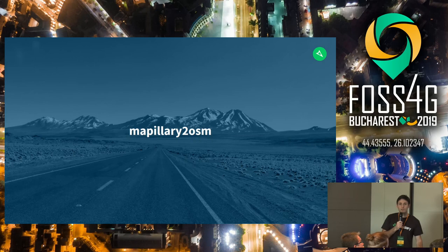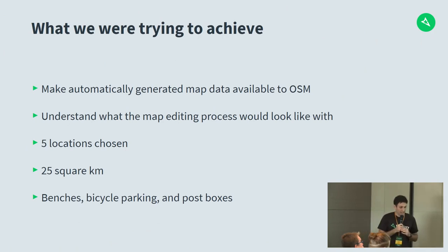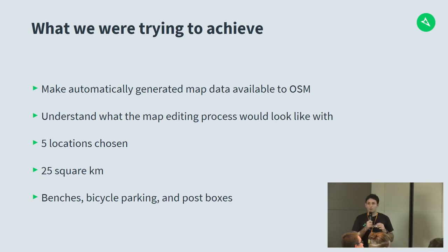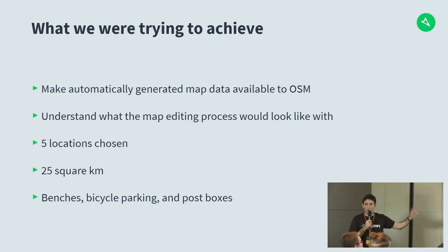The first project I want to talk about was called Mapillary to OSM. This was a general project where we were trying to make this data available for OSM and understand what the editing process would look like, without actually writing any code — just using existing tooling. We tried it on an experimental level, chose five locations, focused on 25 square kilometres in each, and narrowed it down to three objects: benches, bicycle parking, and post boxes — all automatically identified and addable to OpenStreetMap.